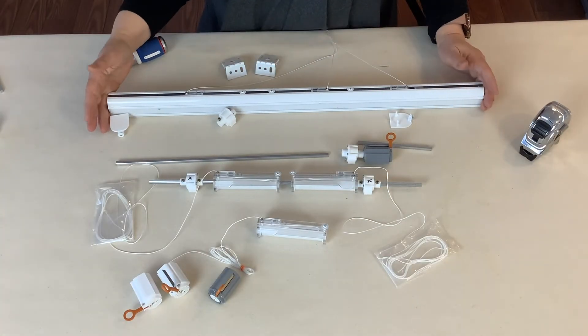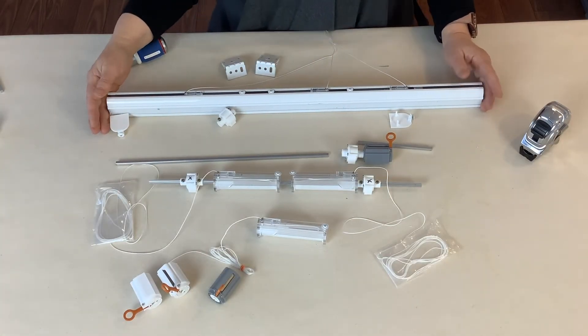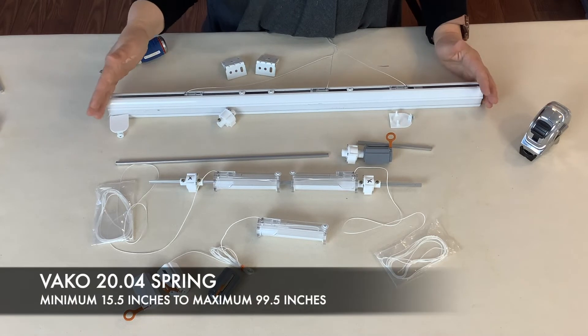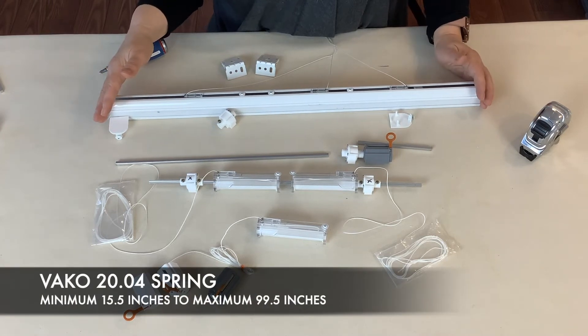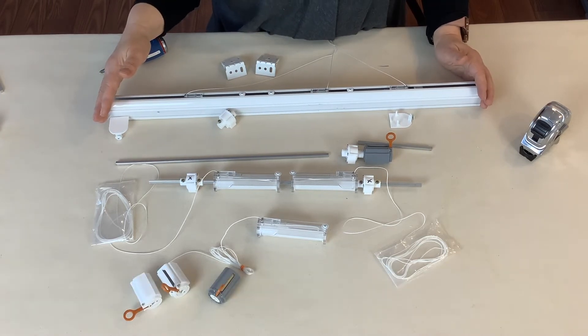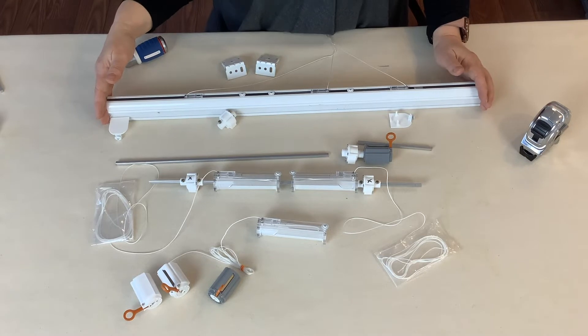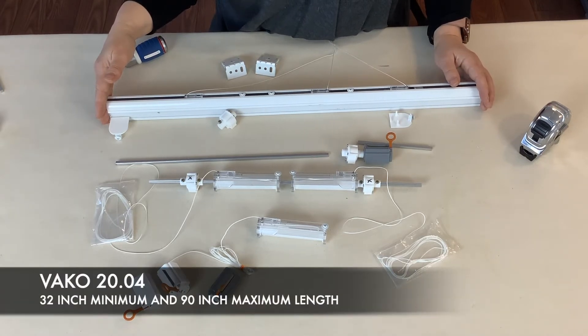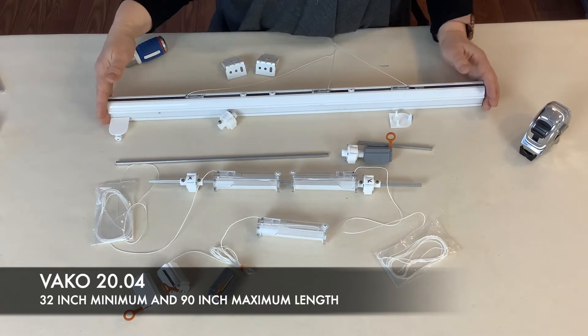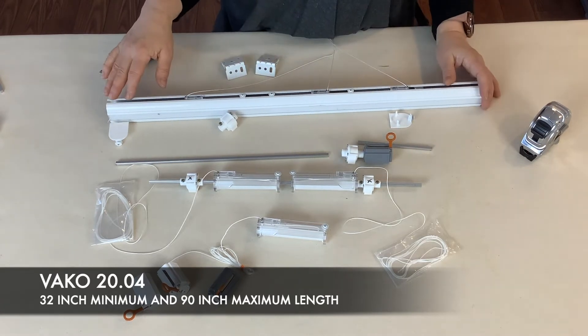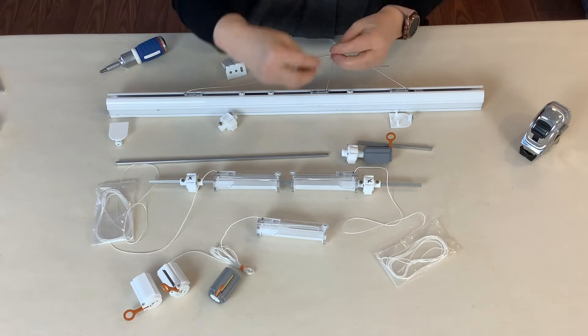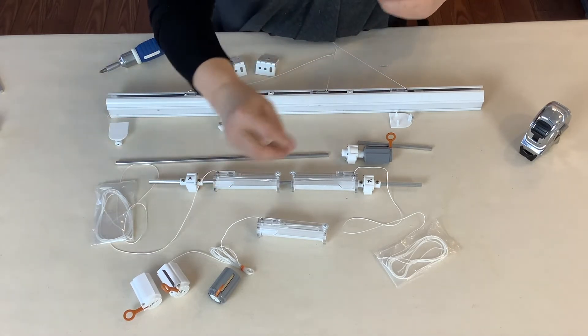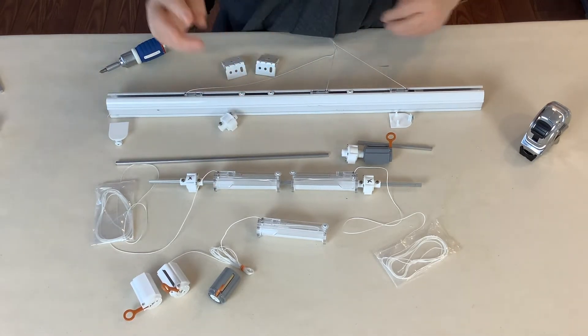With this system you can fabricate shades between 15 and a half inches wide up to 90.5 inches. And they could be as long as 90 inches as well. The minimum length for the shade is 32 inches. And this is just because we need to give enough room for the spring to operate.